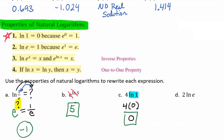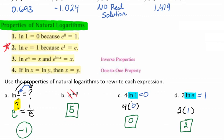For example D, we have 2 times the natural log of e. Using property 2, the natural log of e equals 1. So we're looking at 2 times 1, which gives us 2. That's how you use the properties of natural logarithms to simplify or rewrite expressions.